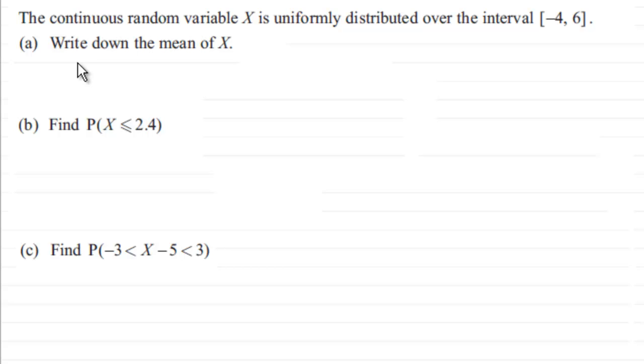Well, just first of all we should know what the distribution looks like. It's going to look like this where it's going from minus 4 to 6. It's uniform - some people call it a rectangular distribution for obvious reasons.